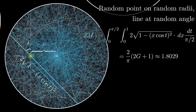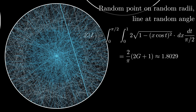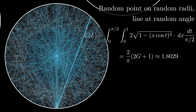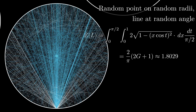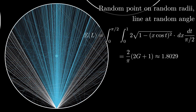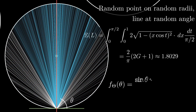Evaluating this integral is not simple, but with a software package we can show that the integral is (2/π)(2G + 1), where G is Catalan's constant, and the expected value comes out to be about 1.802. Once we solve for the density function of θ, it comes out to be sin θ times the inverse hyperbolic sine of tan t, the whole divided by π/2.